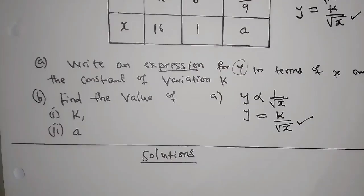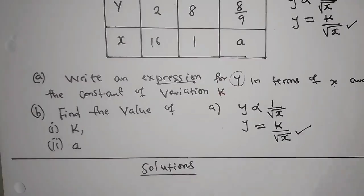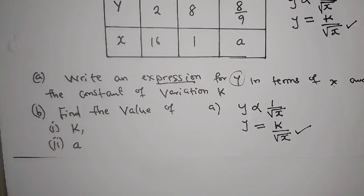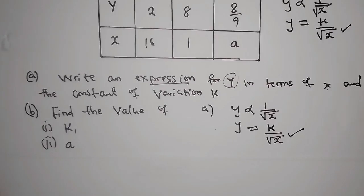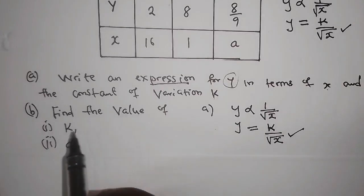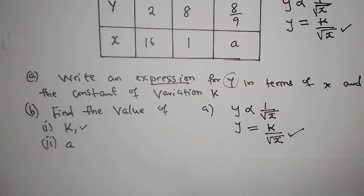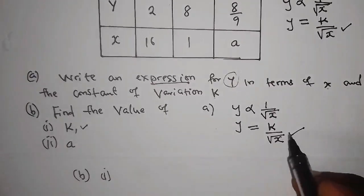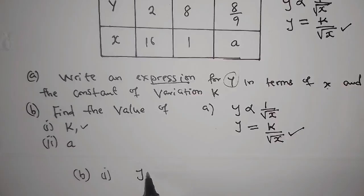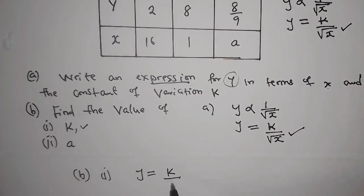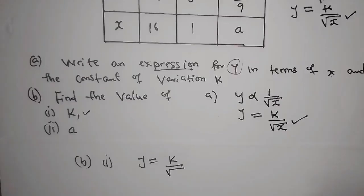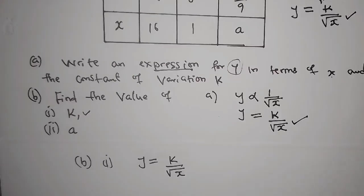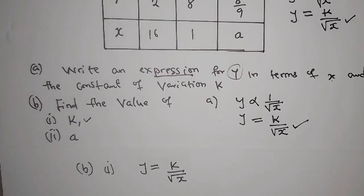Now, on question B, you have two things. Find the value of k. So for us to find the value of k, all you have to do is get this equation, y equals to k over the square root of x. What you need to do is go to the table.